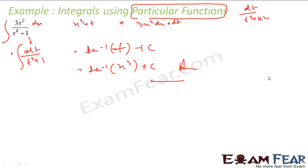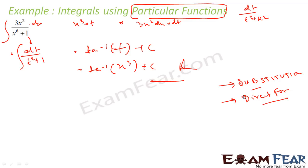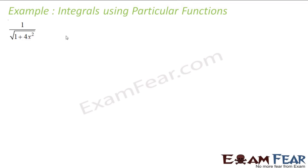Was it difficult? No. What we did here: first we used substitution to convert the integral into a simpler particular form. Once we have that particular form, we used the direct formula. Since dt/(t²+1) = arctan(t) is a known formula, we applied it directly and got the answer in three steps. That is the power of particular formulas.